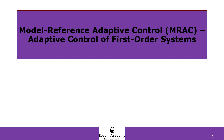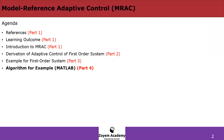Hi everyone and welcome to the ZOEM Academy. This is part four of a series of videos on model reference adaptive control for a first order system. This is the last part of the video series, and today we will be going over the algorithm for the example. It's going to be a quick video and I'm hoping to upload it to the website so you guys can have access to it.